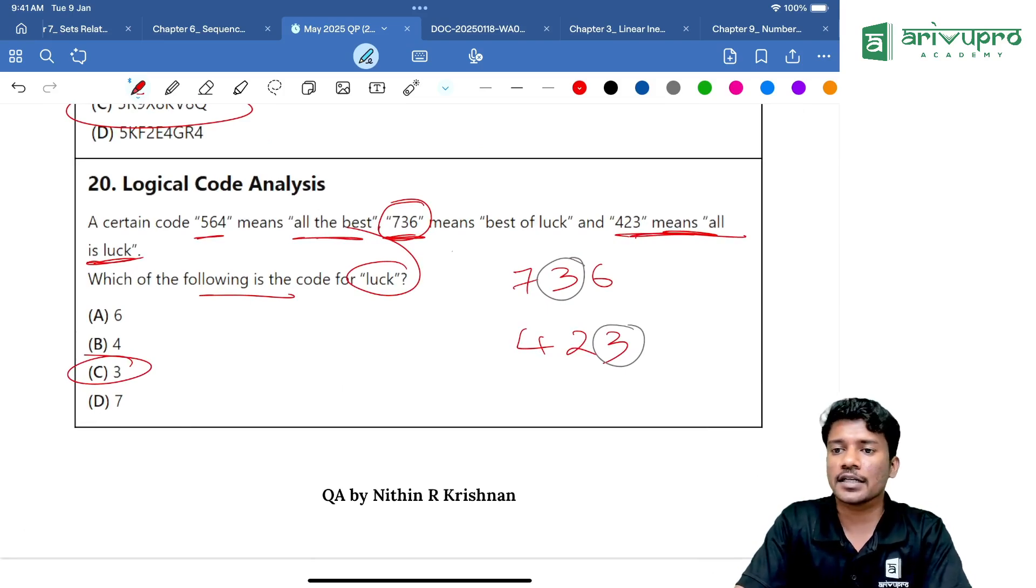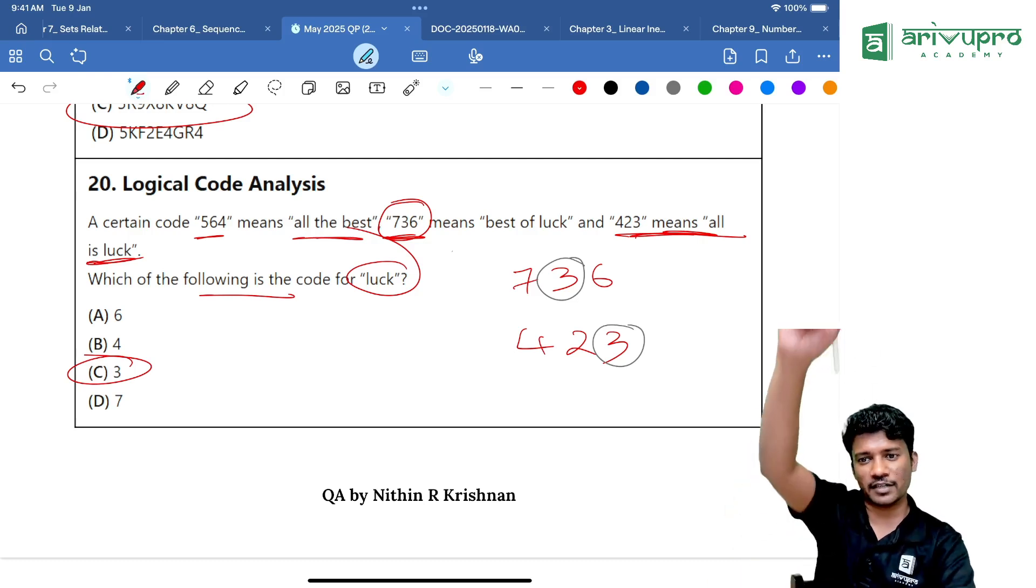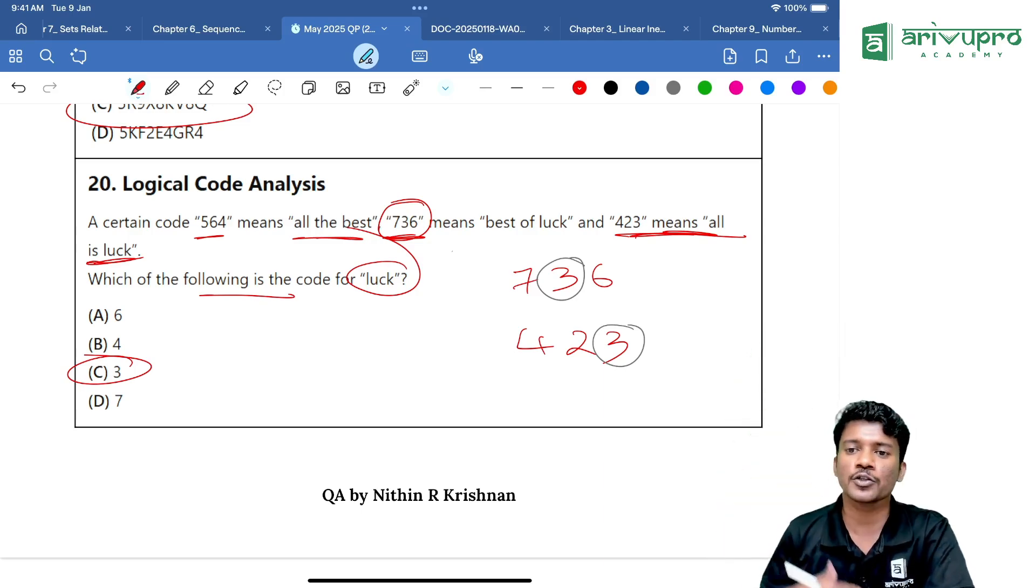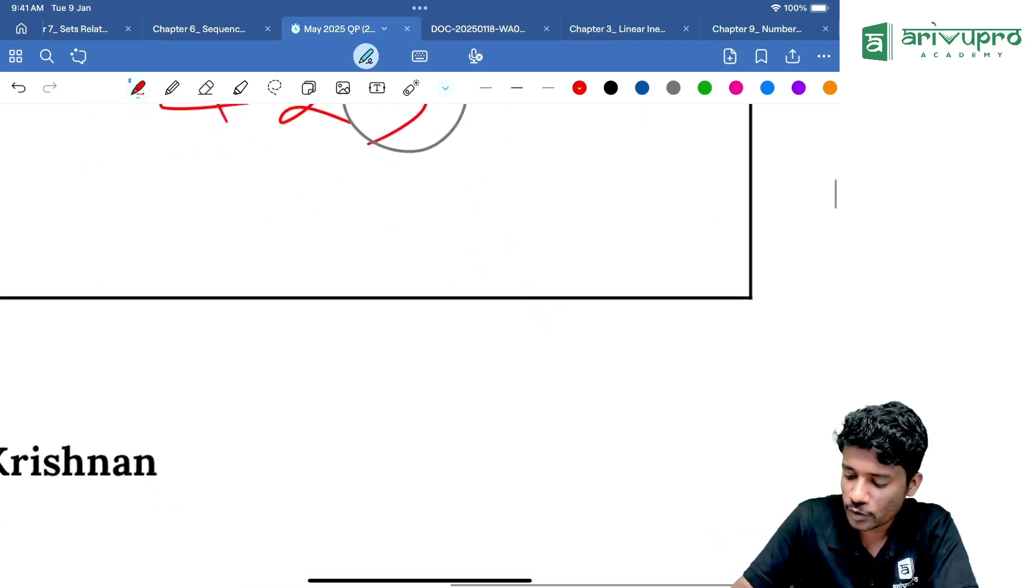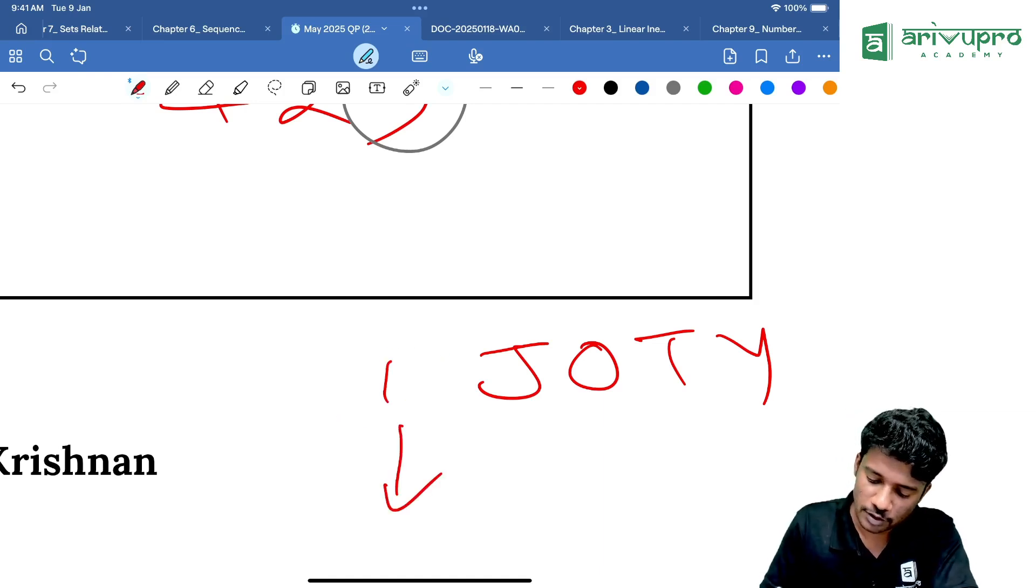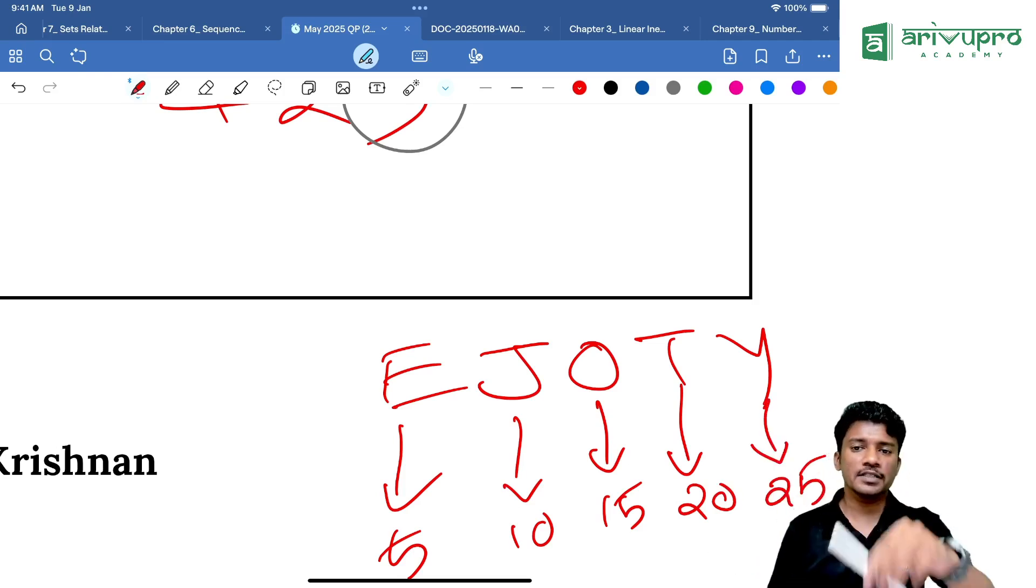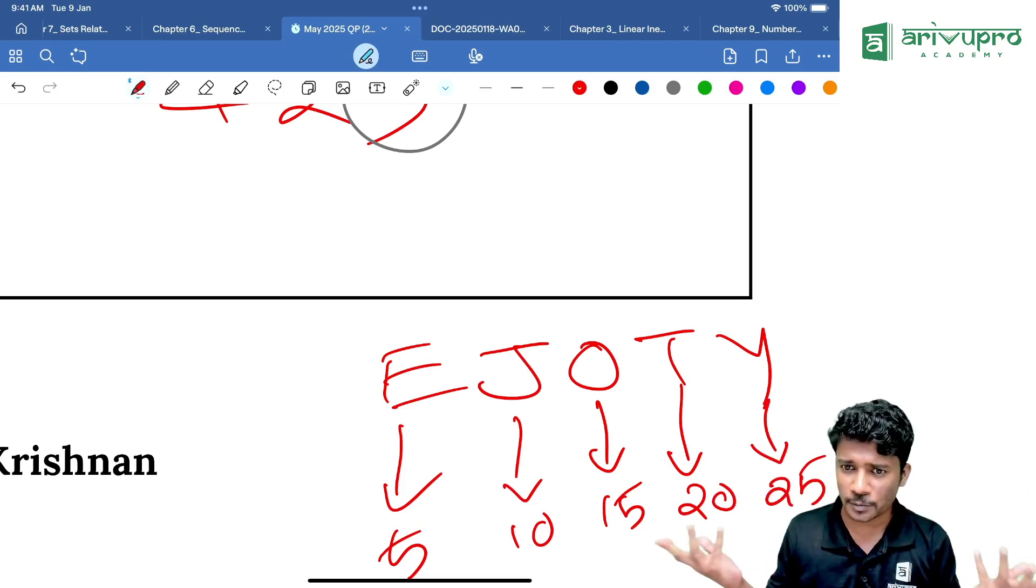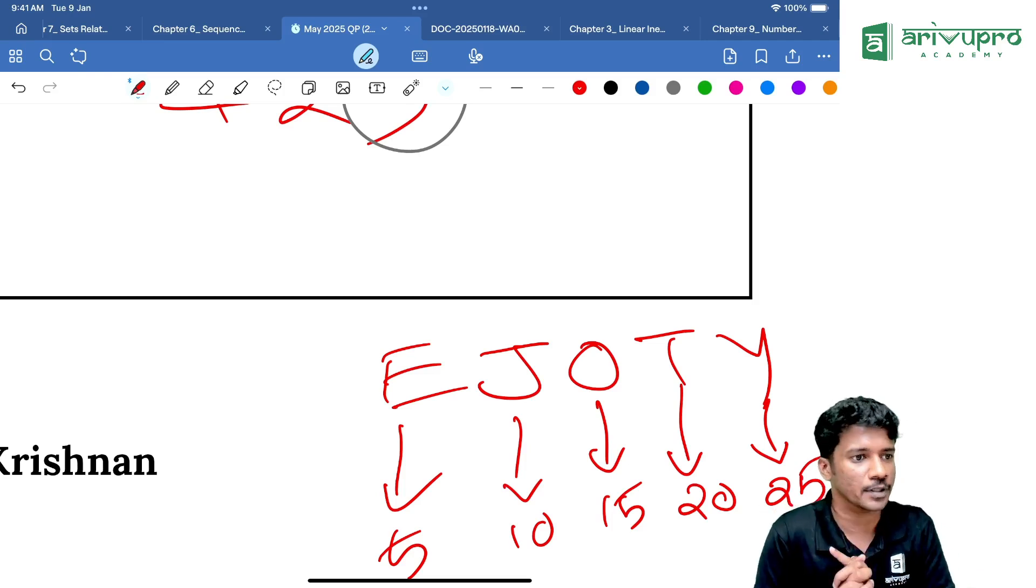These are the questions which were there in your May attempt and Jan attempt and most of the pattern in the questions will be, whenever we take the common difference, you will get the answer. Then you should know the alphabets. You should remember the code. I will send you the workbook for this chapter. There are many questions from number series and all.